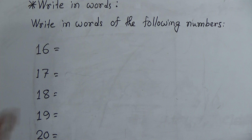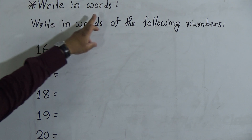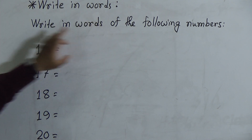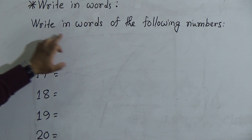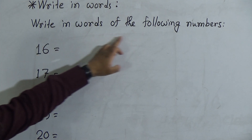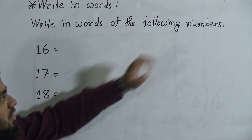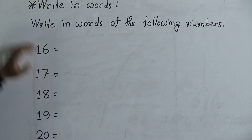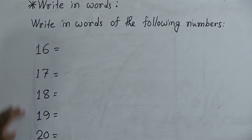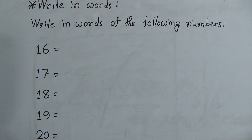The first number is 16. Our topic is Write-in Words and the question is: write in words the following numbers. That means the numbers are given, and we should write down only the spelling of these numbers.